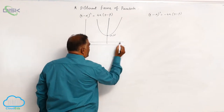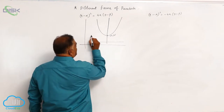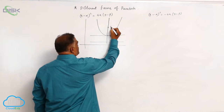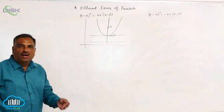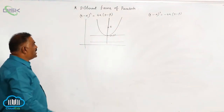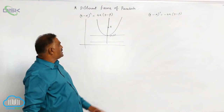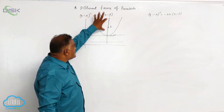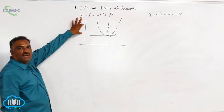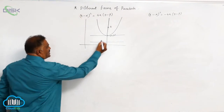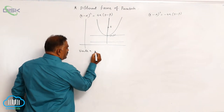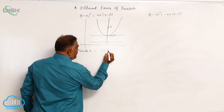This is the directrix, this is the tangent at vertex, and this is the focus. We list out all the properties one by one. We observe one key logic: the axis of the parabola is parallel to the y-axis. First, we write the vertex, which is equal to alpha comma beta.